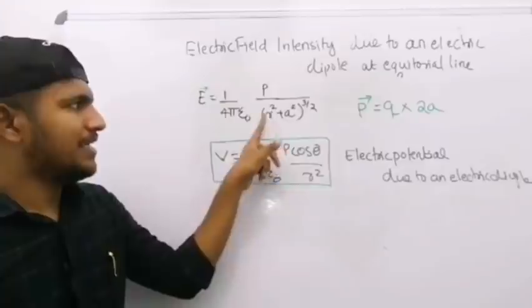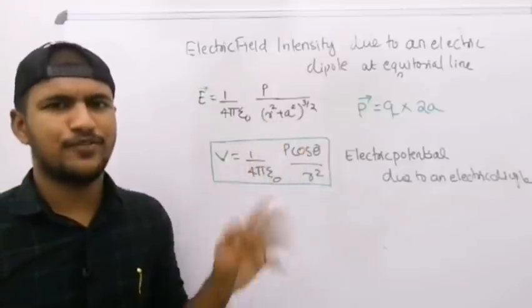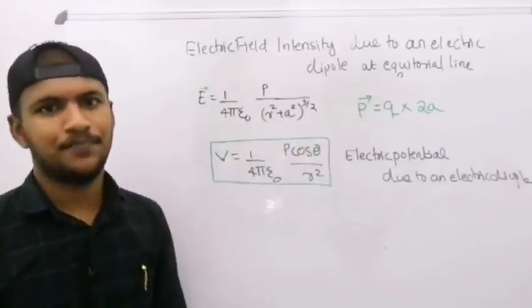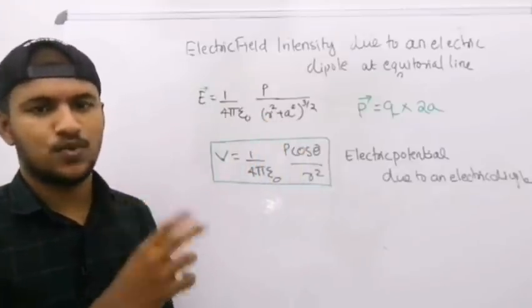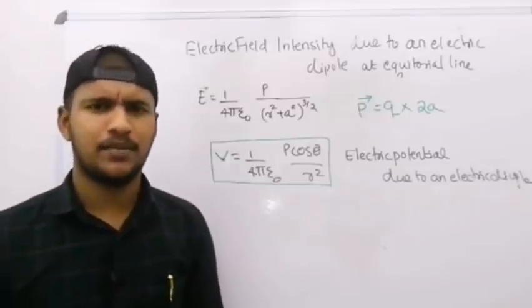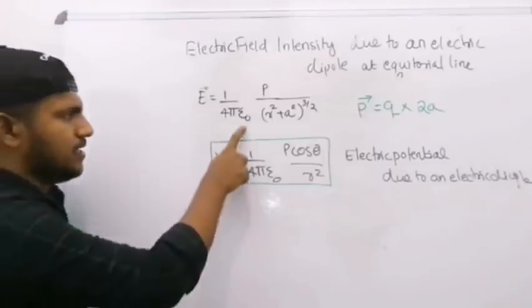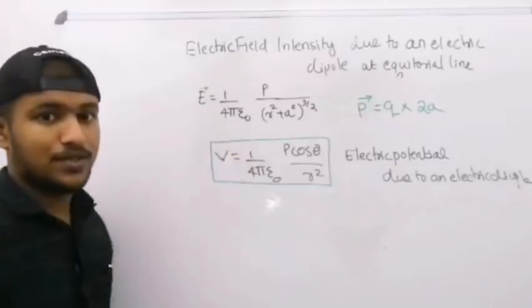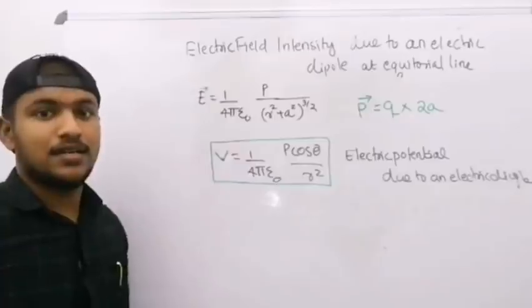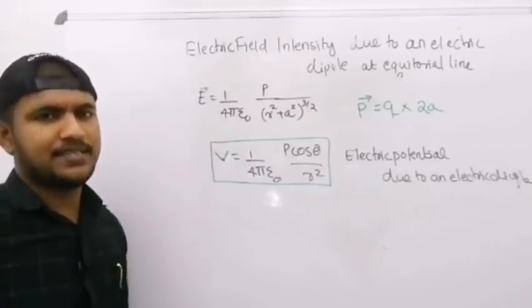If a is very much less than r, that's the general equation. If you have epsilon 0, permittivity of free space.